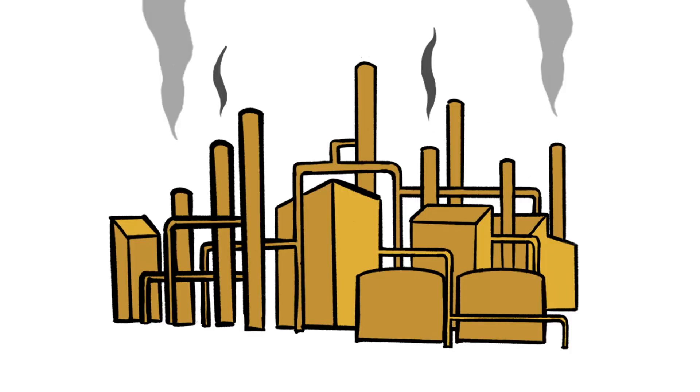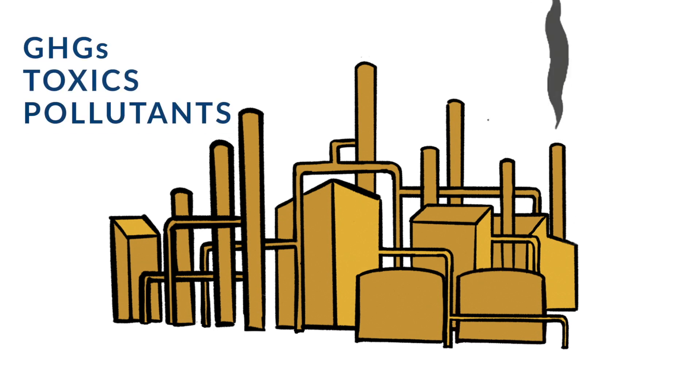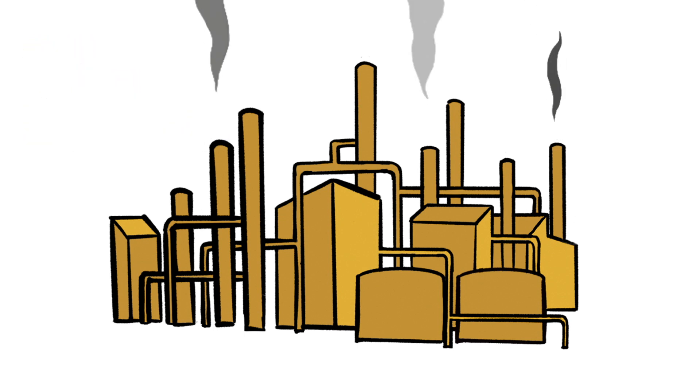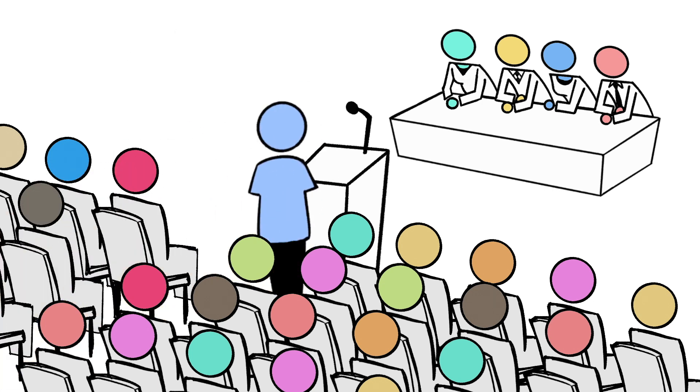CARB also adopts regulations for stationary, non-mobile sources to reduce greenhouse gas and toxic air contaminants. The agency adopts these following the same process as its mobile source regulations.